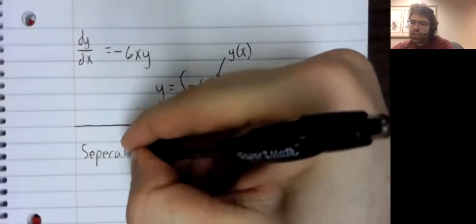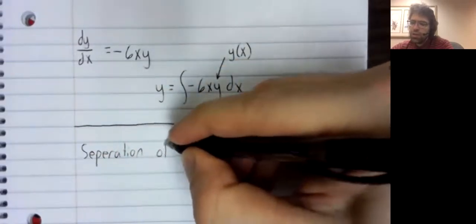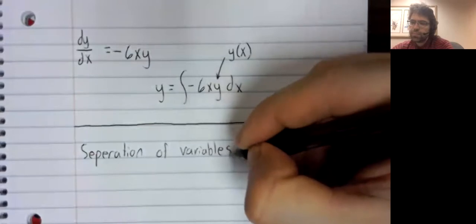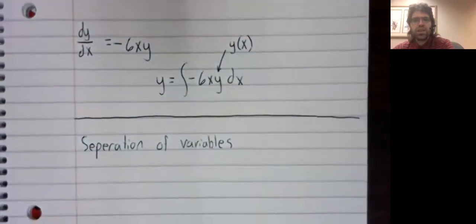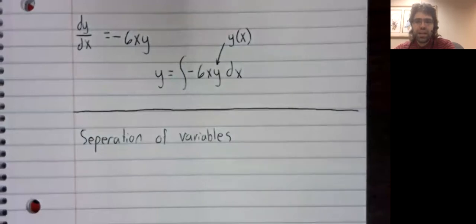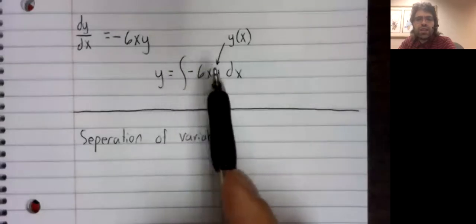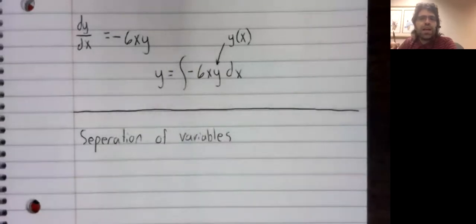Separation of variables is a technique for increasing the number of differential equations that we can solve using integration. Just blundering in and integrating both sides didn't help here. But maybe we can massage the equation a little so that integration becomes a valid solution technique.